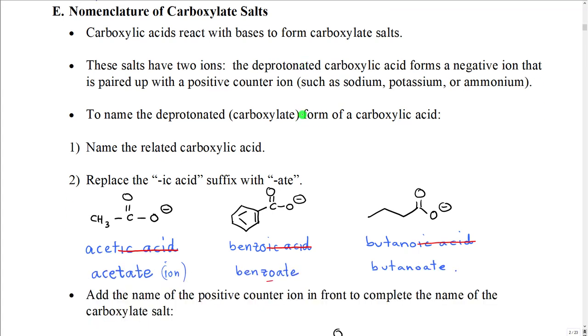Finally, with regard to carboxylic acid nomenclature, I would like to talk to you about how we name carboxylic acids when they have been deprotonated. When we react carboxylic acid with a base, we form what is called a carboxylate salt. The salts have two ions: the deprotonated form of the carboxylic acid, which is going to be a negative ion, and that is going to be paired up with some type of positively charged counter ion, such as sodium, potassium, or even ammonium.